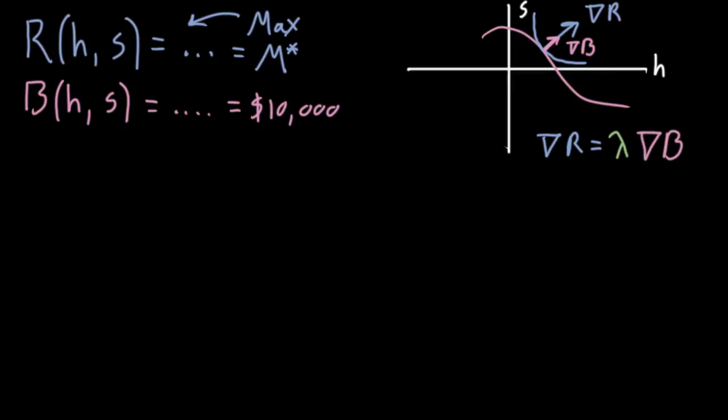And up till this point, this value lambda has been wholly uninteresting. It's just been a proportionality constant, because we couldn't guarantee that the gradient of R is equal to the gradient of B. All we care about is that they're pointing in the same direction. So we just had this constant sitting here, and all we really said is make sure it's not zero. But here, we're going to get to where this little guy actually matters.